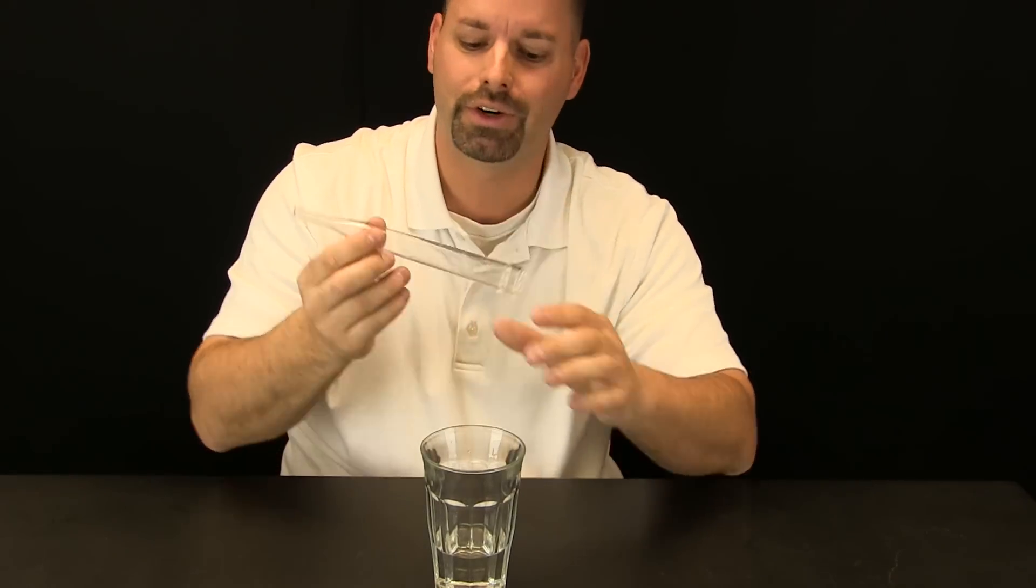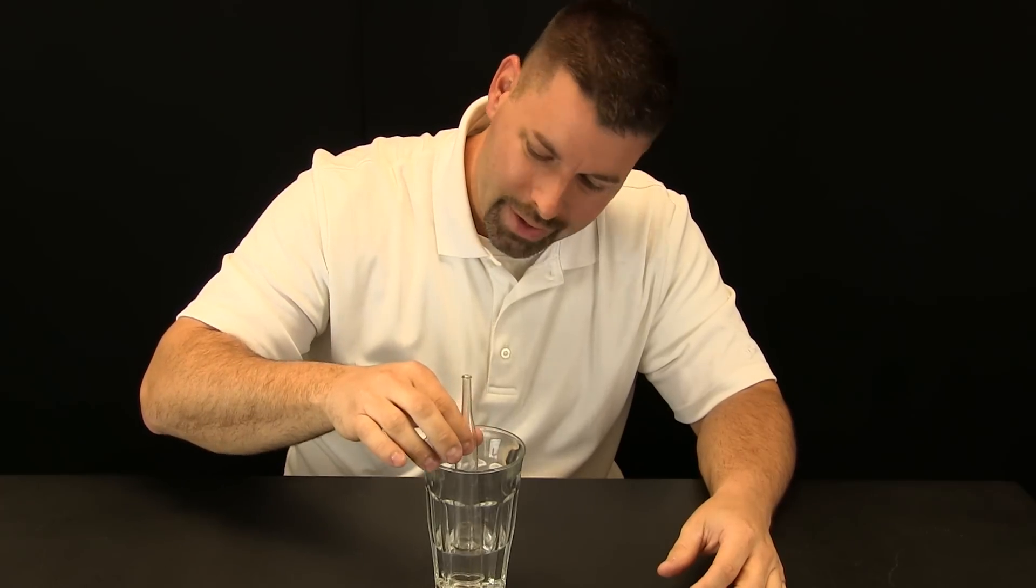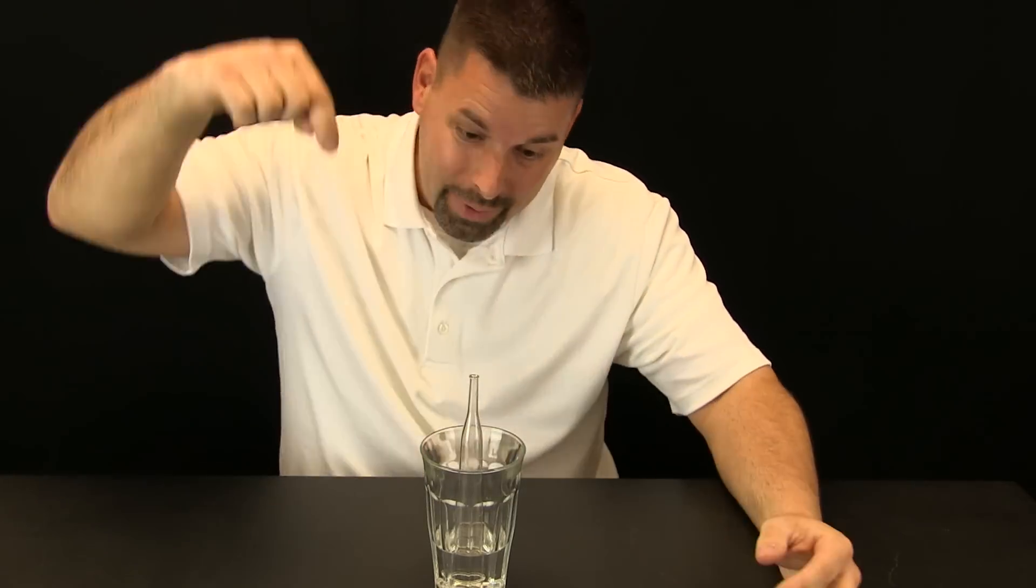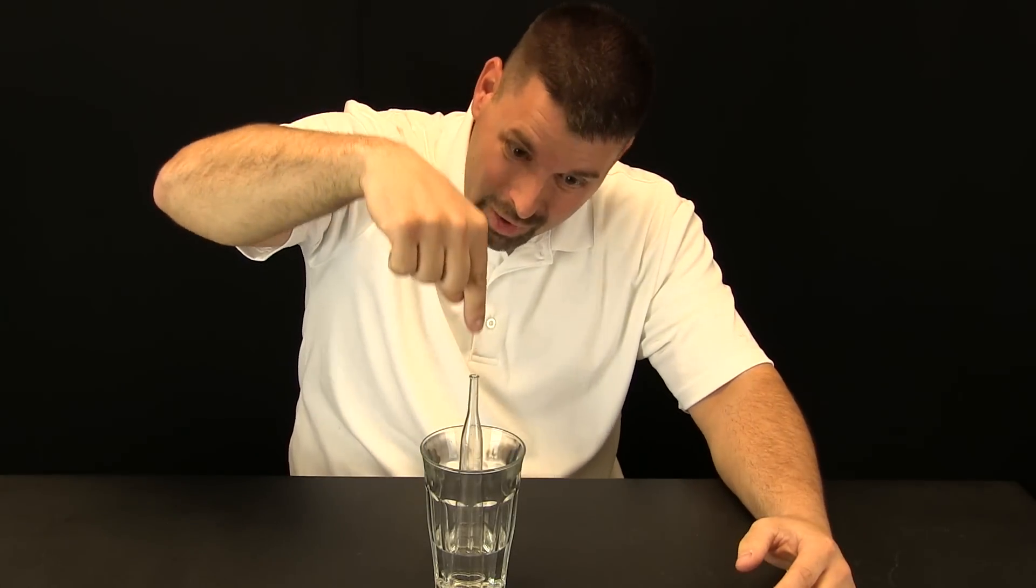But we can also do some other really cool things with this turkey baster. To do that I am going to turn the turkey baster upside down, put it in the same glass of water and you can see not much is happening. I have air pushing down on the water inside the cup and I have air pushing down on the water that is inside the turkey baster.